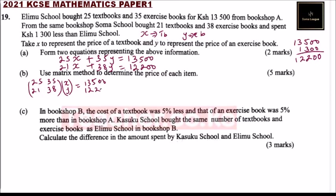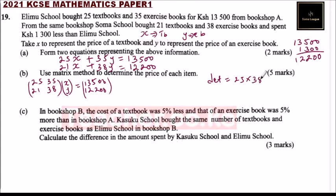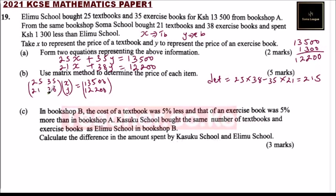To find the values of x and y, we need to solve this matrix. First of all we get the determinant. The determinant is 25 multiplied by 38 minus 35 multiplied by 21, and that gives you 215.